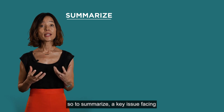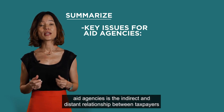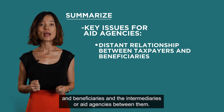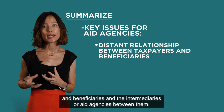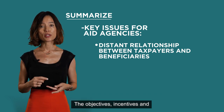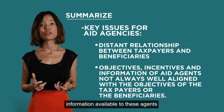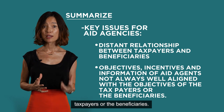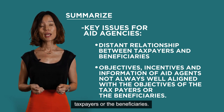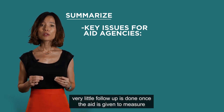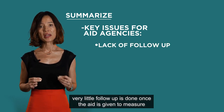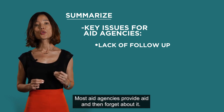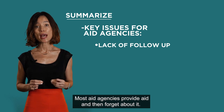To summarize, a key issue facing aid agencies is the indirect and distant relationship between taxpayers and beneficiaries, and the intermediaries or aid agencies between them. The objectives, incentives, and information available to these agents are not always well aligned with the objectives of either the taxpayers or the beneficiaries. Very little follow-up is done once the aid is given to measure whether or not the assistance had a positive impact — most aid agencies provide aid and then forget about it.